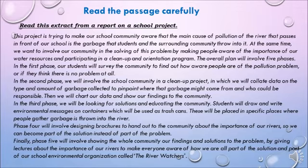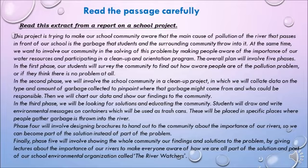This project is trying to make our school community aware that the main cause of pollution of the river that passes in front of our school is the garbage that students and the surrounding community throw into it. At the same time we want to involve our community in solving this problem by making people aware of the importance of our water resources and participating in a cleanup and orientation program. The overall plan will involve five phases. In the first phase, our students will survey the community to find out how aware people are of the pollution problem or if they think there is no problem at all. In the second phase, we will involve the school community in a cleanup project in which we will collect data on the type and amount of garbage collected to pinpoint where that garbage might come from and who could be responsible.